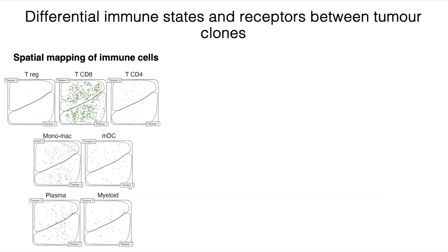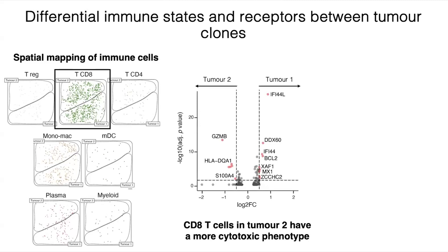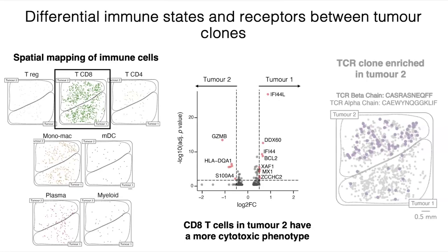We then asked what the microenvironments of these two tumor cell populations look like. CD8 T cells within the tumor two population have a more cytotoxic phenotype. Looking at TCR clonality data, one particularly expanded T cell clonotype is differentially infiltrating into tumor two compared to tumor one — more cytotoxic T cells infiltrating the side of the tumor that is transcriptionally, epigenetically, and genomically distinct.